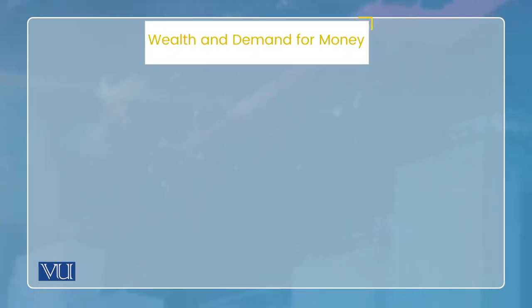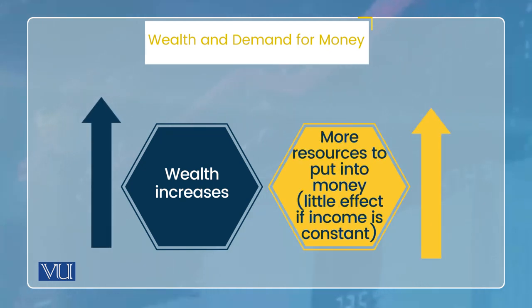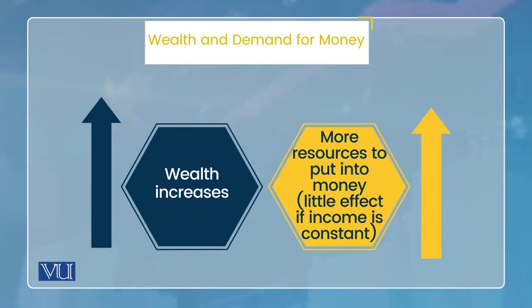Aur yahan par yeh baat bhi clear ho jaye ki ab wealth main dobara likh raha hoon. Jab ke pehle main likh chuka hoon, toh maine aapko pehle bhi bataya tha, wahan wealth aur income ka ek hi meaning hai. Ab hum likhte hain: wealth which is not related to income. Yaani ki wealth kisi bhi form mein ho — aap kama ke use accumulate karein, ya aapko walidain ki taraf se ya kisi aur tarah se mil jaye — wealth ka ek hi matlab iss sense mein zaroor hoga ki wealth se zyada ho jata hai asset. Toh wealth agar income se related na bhi ho, toh us se money ki demand zyada hogi.